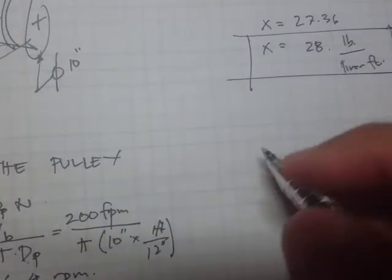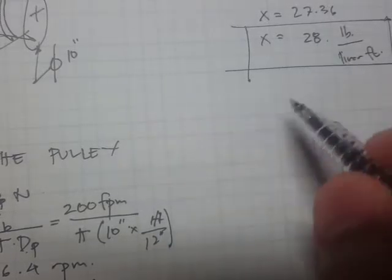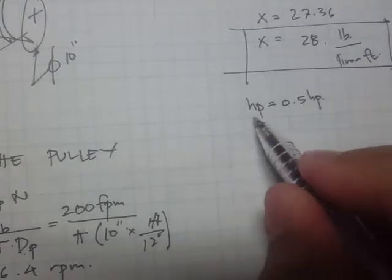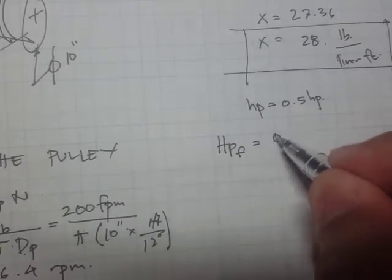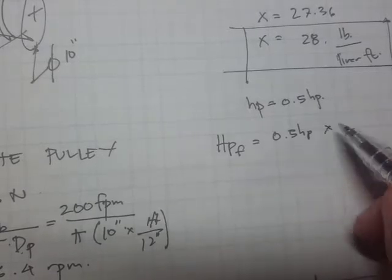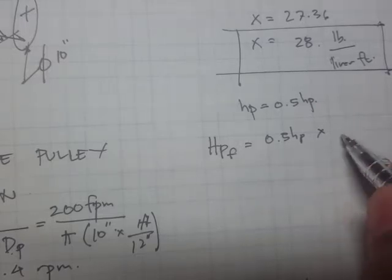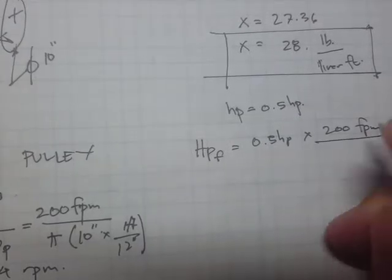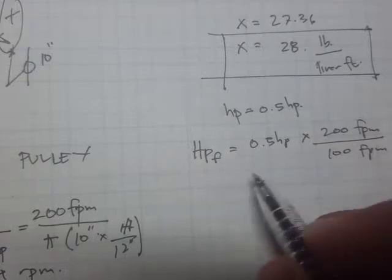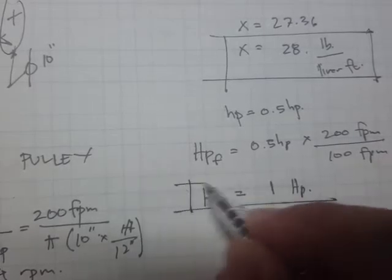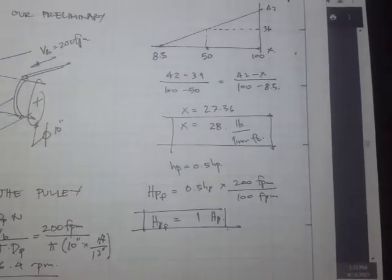Continuing our computation, we obtain a friction horsepower of 0.5 HP. Our friction horsepower is 0.5 HP times the belt speed of 200 FPM divided by 100 FPM, so therefore we have 1 HP.